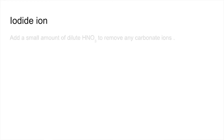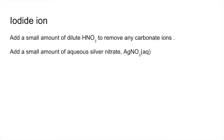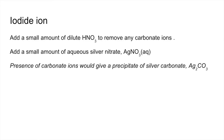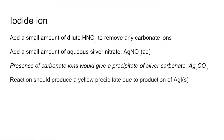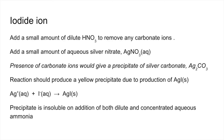The last ion is the iodide ion — very similar again. We have the nitric acid at the start to remove the carbonate ions, then add a small amount of silver nitrate solution. If there were iodide ions present, you get a yellow precipitate due to the production of silver iodide — there's the ionic equation. This time with the aqueous ammonia, the precipitate is insoluble whether you add dilute or concentrated aqueous ammonia.